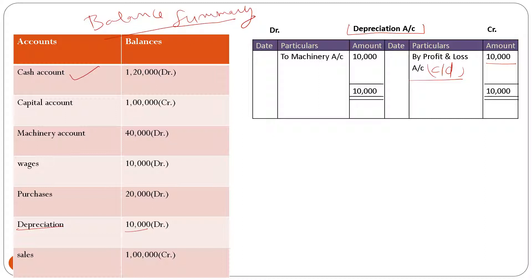So to recap our balance summary: cash account one lakh twenty thousand rupees, capital account one lakh rupees, machinery account forty thousand rupees, wages ten thousand rupees, purchases account twenty thousand rupees, depreciation account ten thousand rupees, and sales one lakh rupees. Now let's discuss why we label each balance as debit or credit.